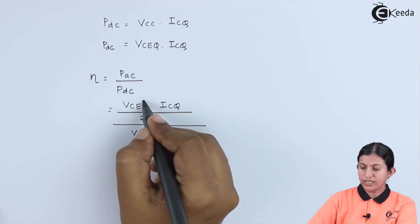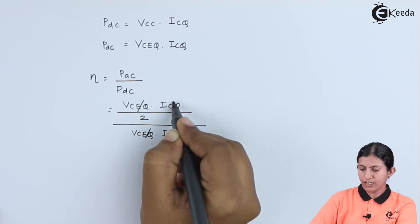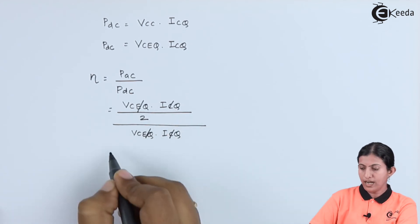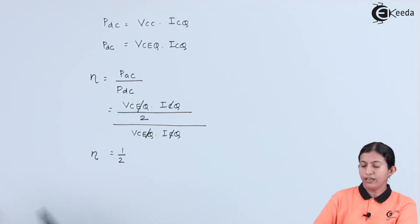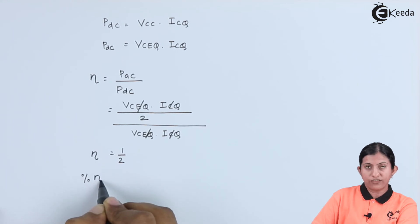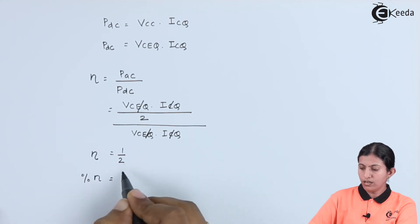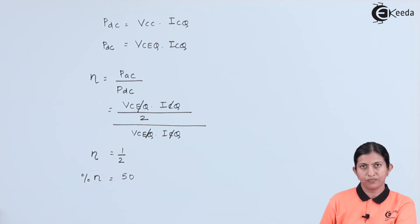In that equation, VCEQ and ICQ will get cancelled and we will get eta is equal to half. If we take the efficiency in terms of percentage, then percentage efficiency is equal to 1 by 2 which is nothing but 50%.